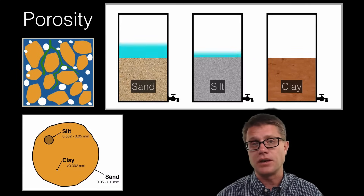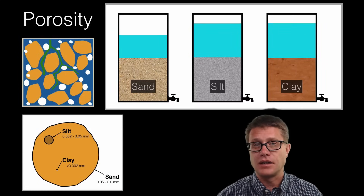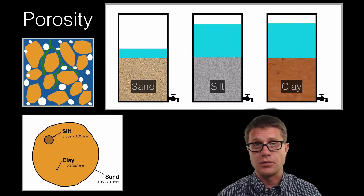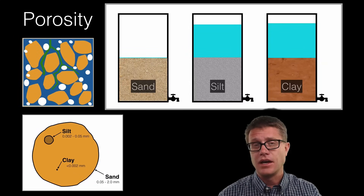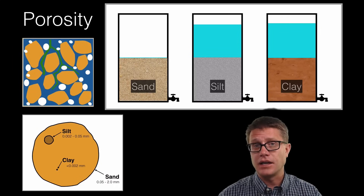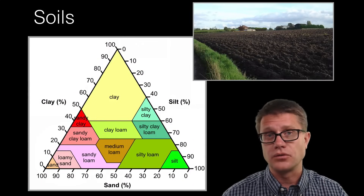Now what do those particles contribute to? It is the type of the soil and the porosity of that soil. So let us say we take those three particles and fill up a container with sand, silt and clay, and then fill it up with water. In the container that has sand it is going to drain out — we are going to have high porosity — and that is going to take hours. In the silt it is going to take days. And in the clay it is going to take years. And so having a lot of clay can really stifle the movement of water into the pores where those roots need it.